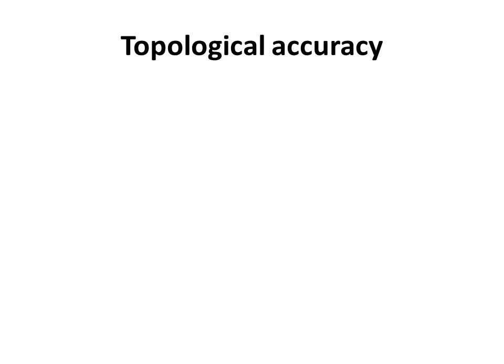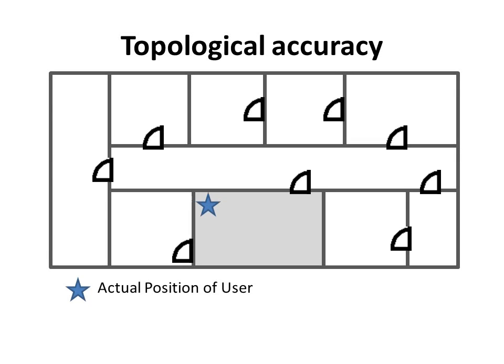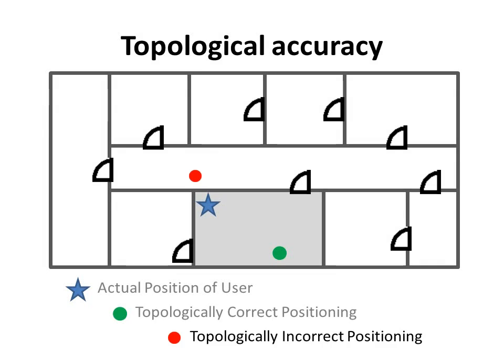To better explain topological accuracy, let's consider this building layout. The star marker denotes the user's actual position in the building. The green dot marker denotes a topologically correct positioning estimate, as it is in the same room as the user's actual position. The red dot marker denotes a topologically incorrect positioning estimate — though this red marker is very close to the user's actual position, there is a wall between them, which makes it topologically incorrect.